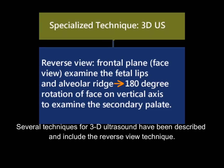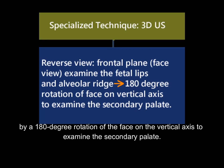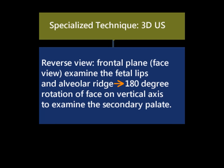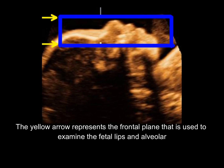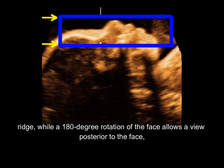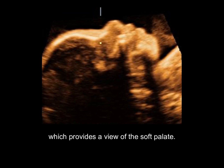Several techniques for 3D ultrasound have been described, including the reverse-view technique. In this technique, the frontal plane is used to examine the fetal lips and alveolar ridge, followed by a 180-degree rotation of the face on the vertical axis to examine the secondary palate. The yellow arrow represents the frontal plane used to examine the fetal lips and alveolar ridge, while a 180-degree rotation of the face allows a view posterior to the face, providing a view of the soft palate.